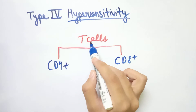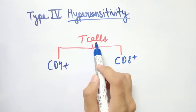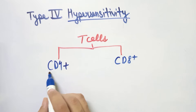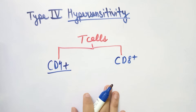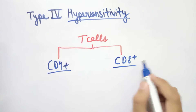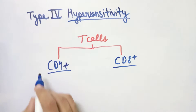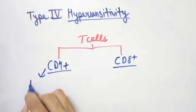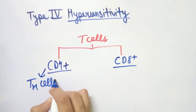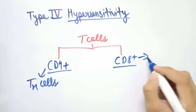T cells mediate this Type 4 hypersensitivity reaction, and T cells are of two types: the first is CD4+ cells and the second is CD8+ cells. CD4+ cells are also known as Th cells, or T helper cells, while CD8+ cells are known as killer T cells.